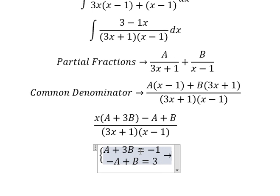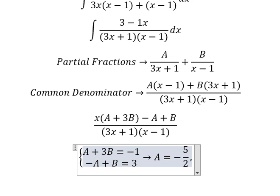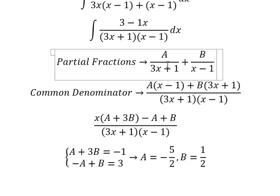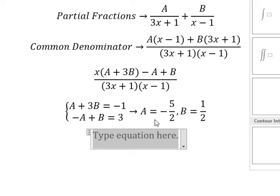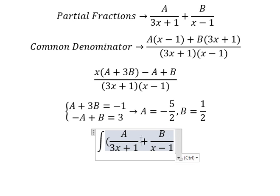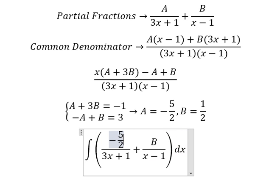Now we need to find the solutions of A and B. So A equals negative 5 over 2, and B equals 1 over 2. Now we have the final answer: the integral of (-5/2)/(3x+1) + (1/2)/(x-1) dx.